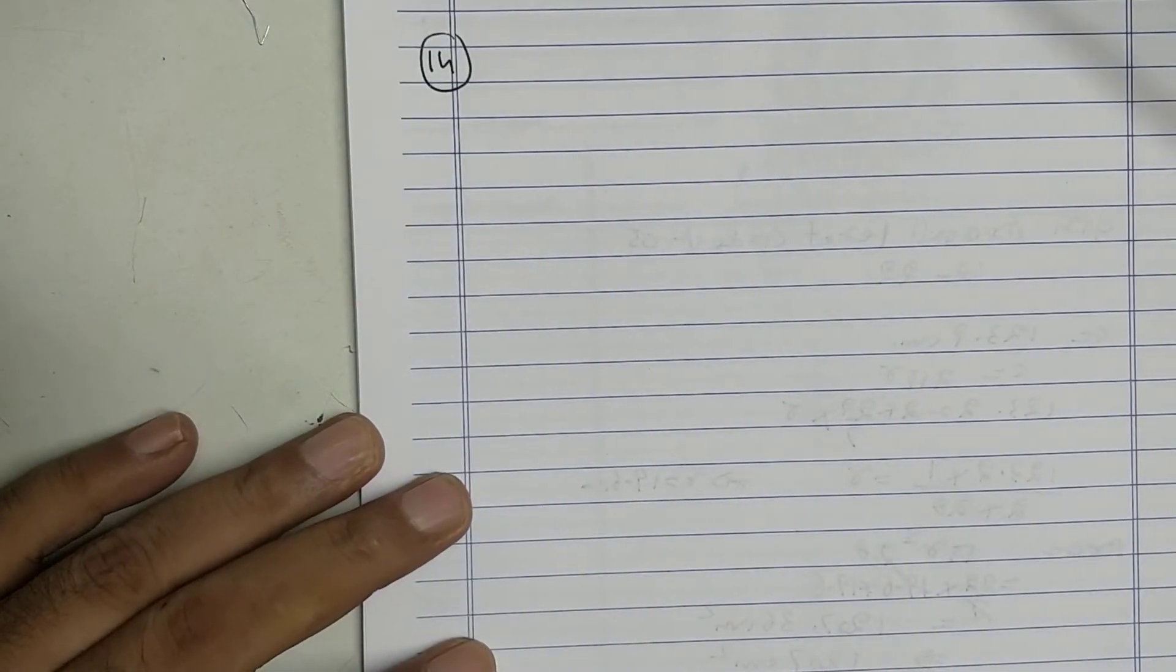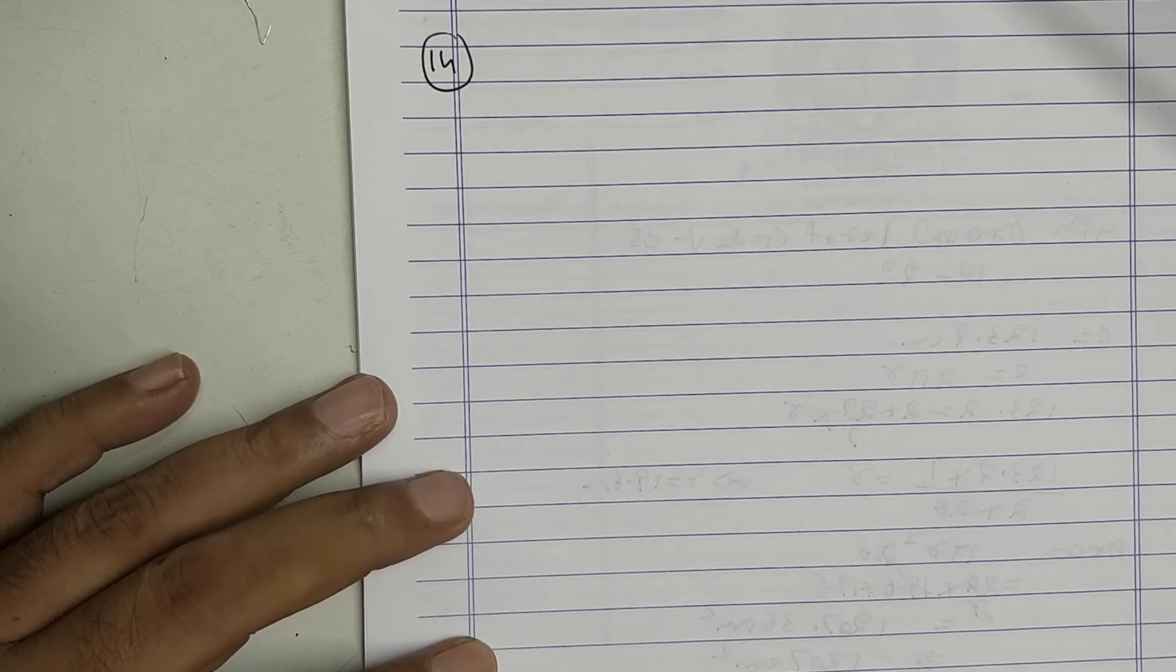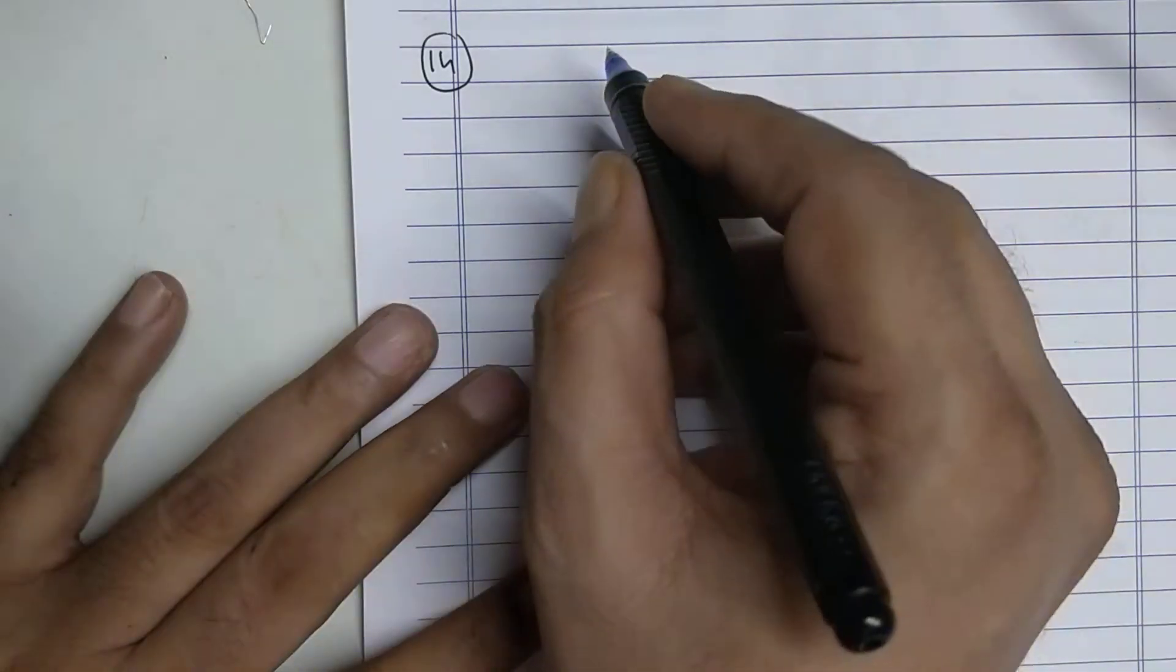Sum number 14. You see the figure, the area enclosed between circumferences of two concentric circles given. Inner circumference is given.